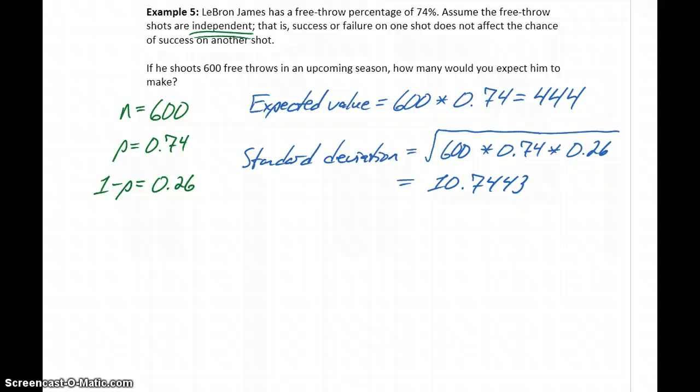What we're interested in is this range of likely values. We're going to take our expected value and add one standard deviation to it. We'll take 444 plus 10.7 and 444 minus 10.7 to get 454.7 and 433.3.